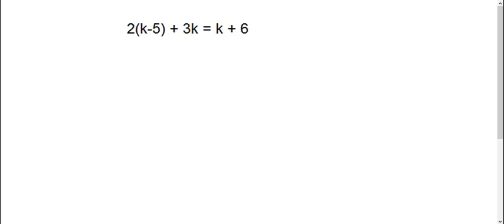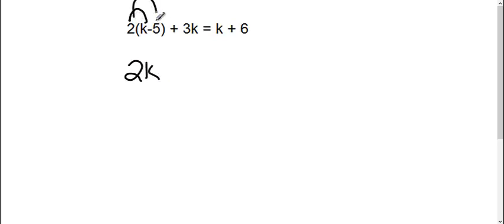Alright, here we're solving for k. So, before I can start moving stuff and combining stuff, we always do parentheses first. So, I need to distribute. 2 times k, I get 2k. 2 times negative 5, I get negative 10.